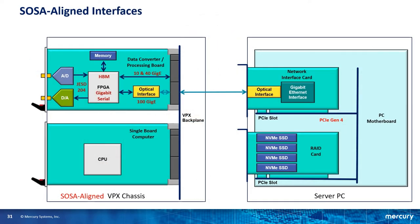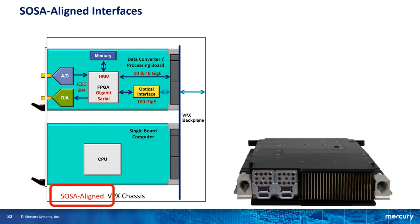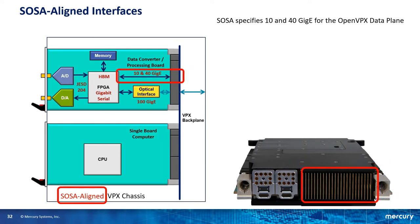Going back to our system drawing, I'll remove the storage portion to make room for the SOSA-aligned board. SOSA specifies 10 and 40 gigabit Ethernet on the OpenVPX data plane — here in the block diagram and here physically on the VPX connector on the board. If the SBC is also SOSA-aligned, it will have 10 or 40 GigE on the correct pins on the connector as per the OpenVPX profile for an SBC within SOSA. The data plane consists of dedicated signals routed through the backplane to carry data — we're talking about a path between the FPGA board through the backplane to the SBC. It's very likely that the data from the A to D is being processed in the FPGA before it's sent to the SBC and getting data reduced, but to show the maximum bandwidth I'm going to assume the raw A to D data is being passed through at the full sample rate.